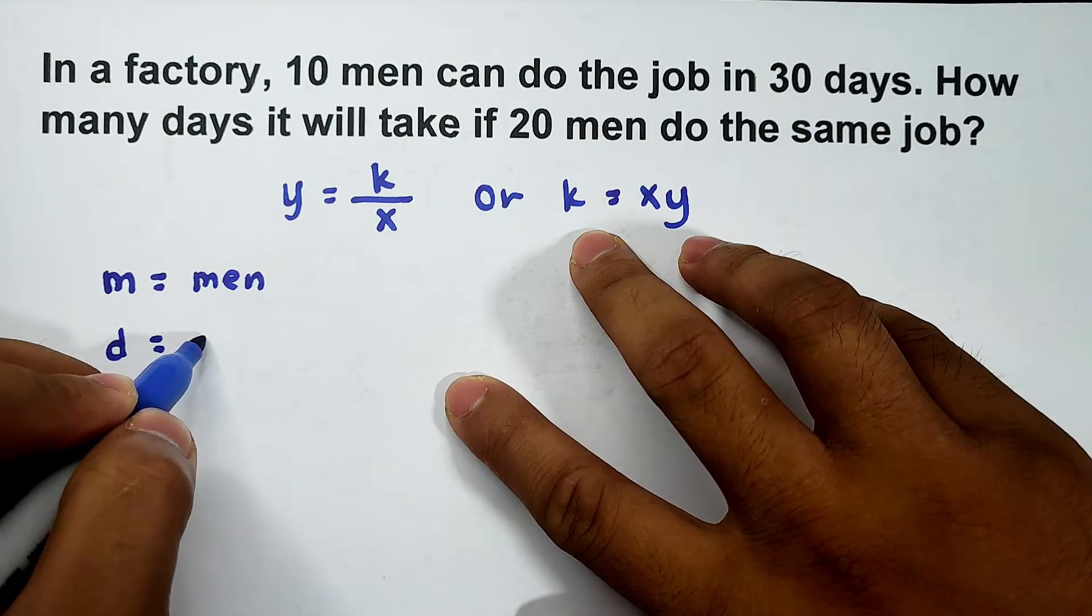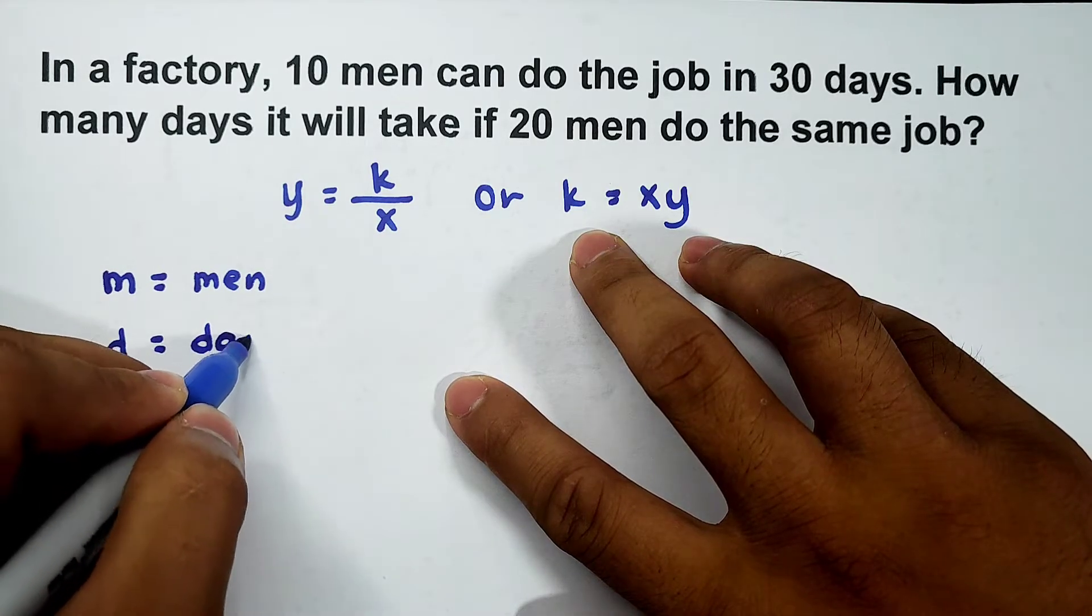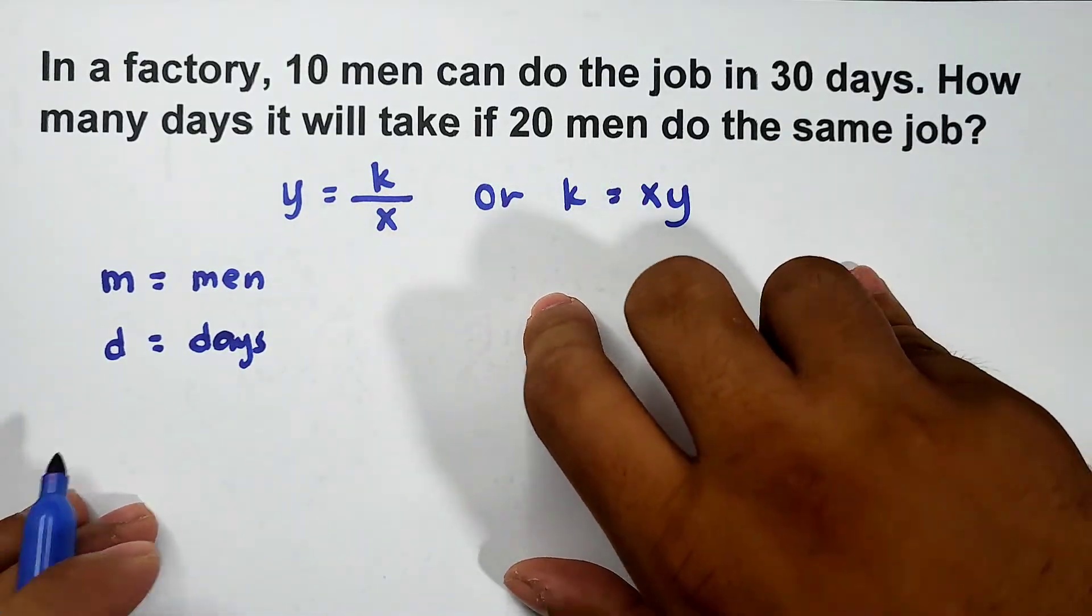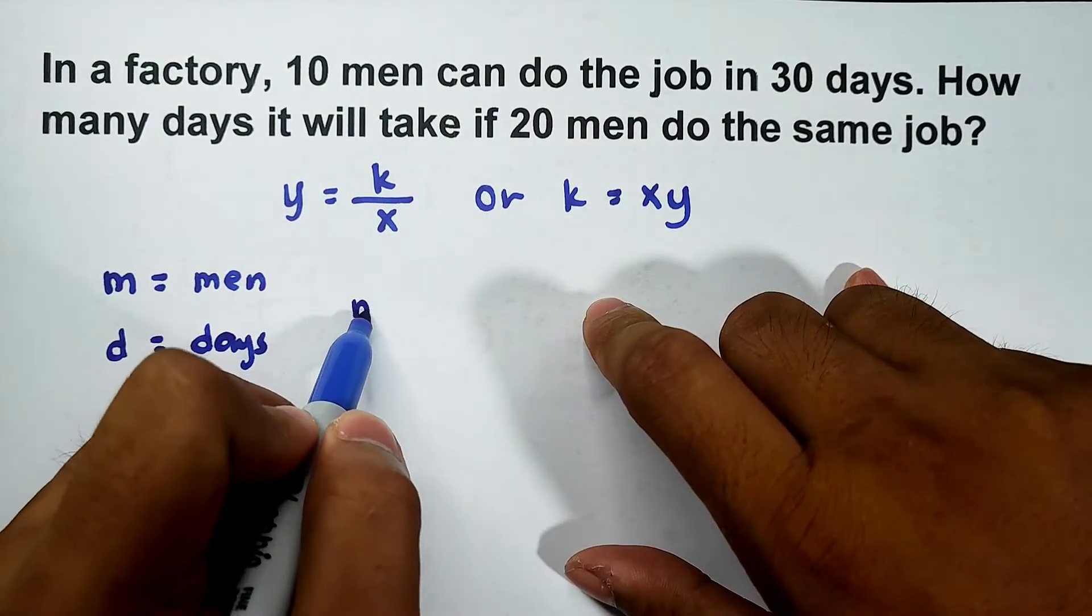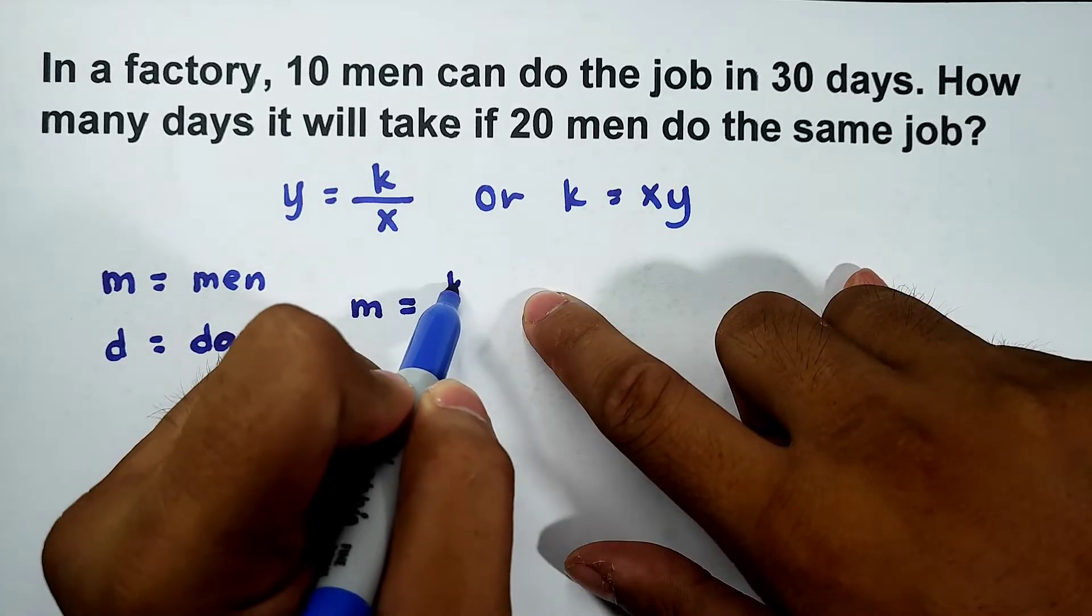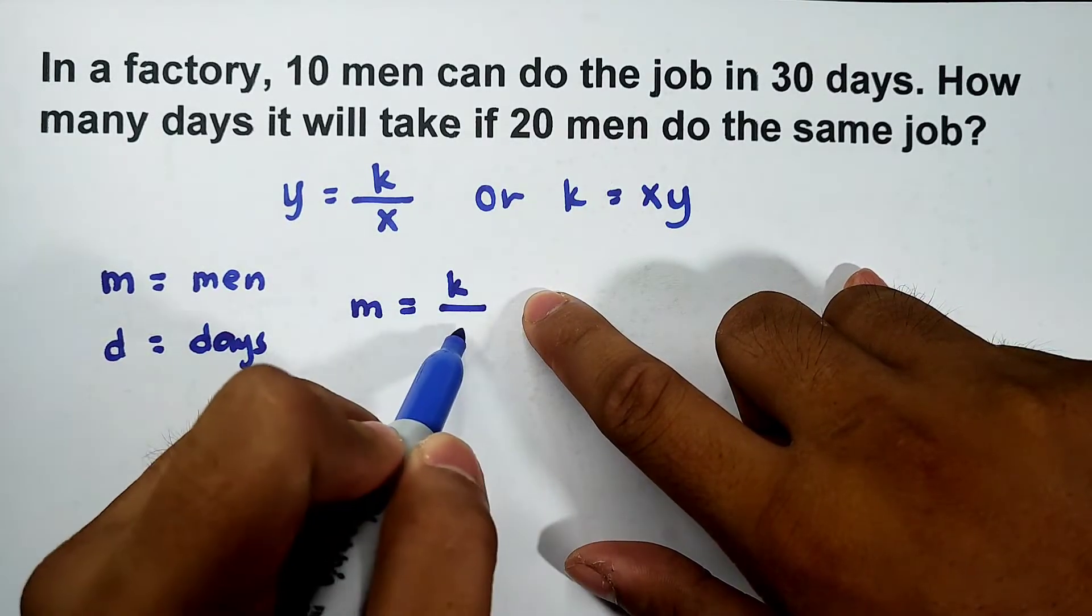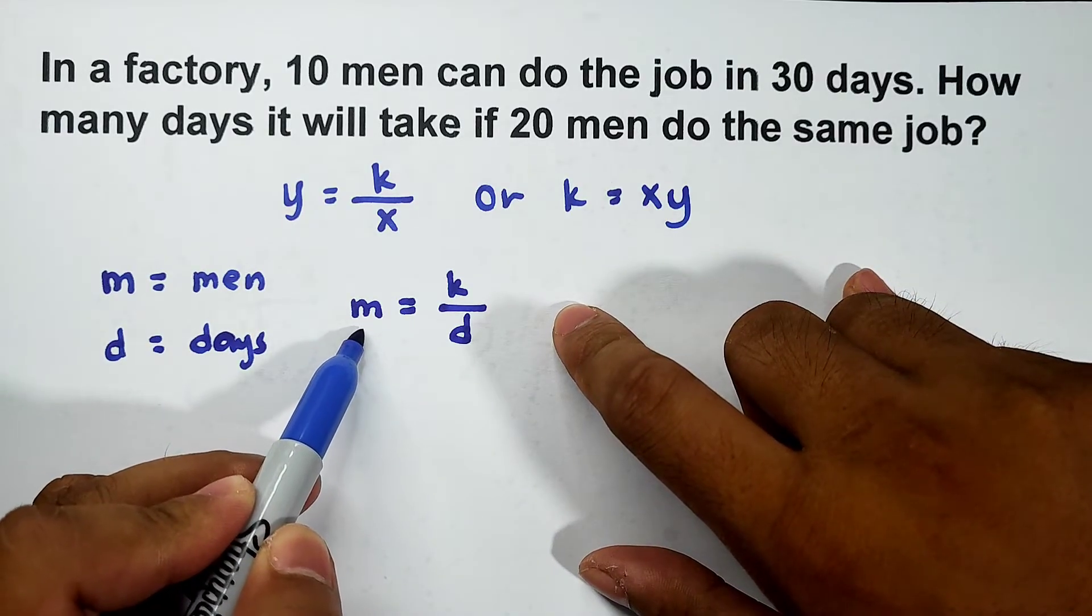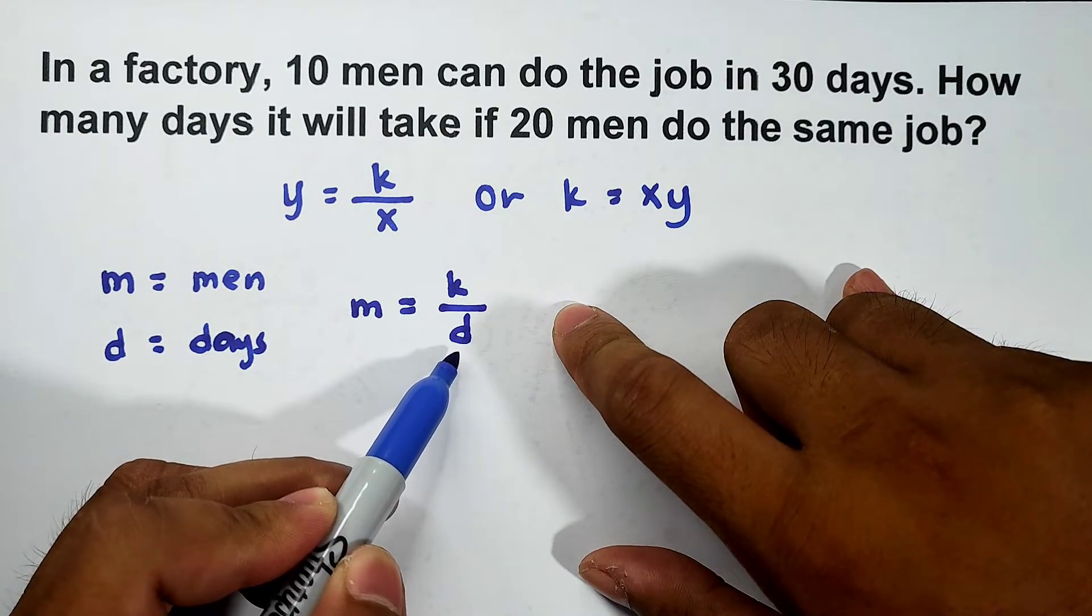Now sir, paano ngayon natin siya gagawin gandong equation? Simple naman yun, parang ganito lang siya: m = k/d. Number of men varies inversely with the number of days.